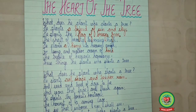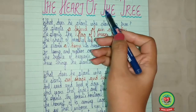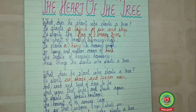So before starting with the central idea, let me tell you what central idea is. Central idea is the main idea of the poem. Here in the poem 'The Heart of the Tree', the poet Henry Kyler Burner tells us about planting trees and the benefits we gain from it.